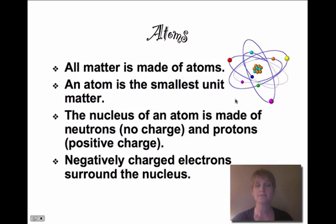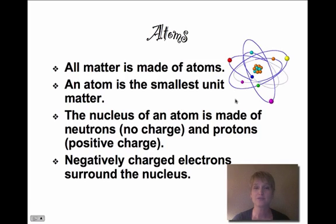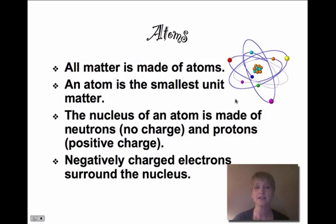We're going to start with atoms because all matter is made of atoms. An atom is the smallest unit of matter. The nucleus of an atom is made of neutrons, which don't have any charge, and protons, which have a positive charge. The negatively charged electrons surround the nucleus.